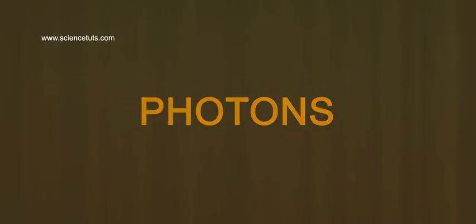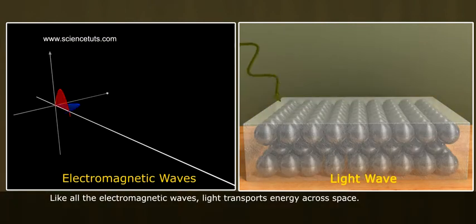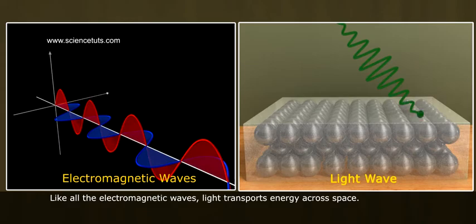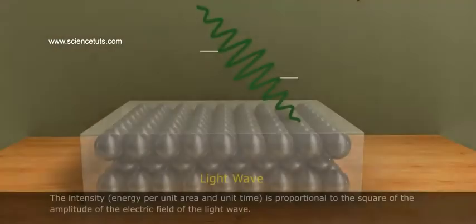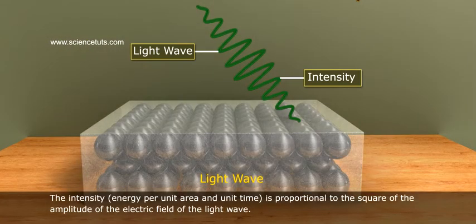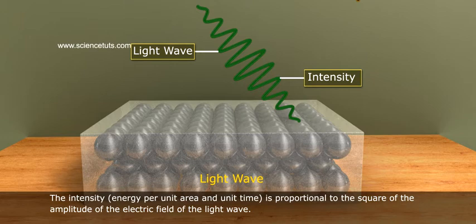Like all electromagnetic waves, light transports energy across space. The intensity, energy per unit area and unit time, is proportional to the square of the amplitude of the electric field of the light wave.